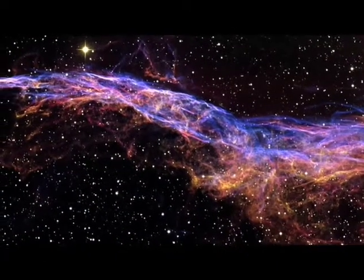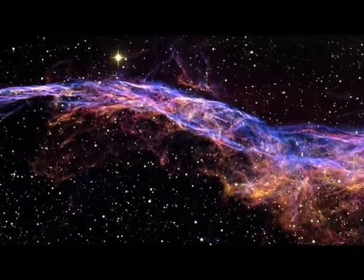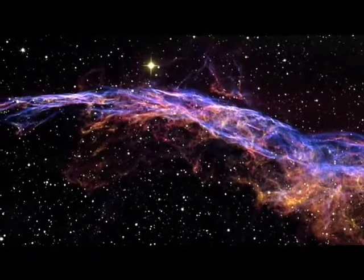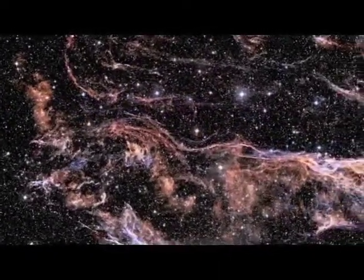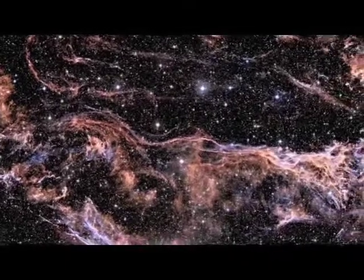The intertwined rope-like filaments of gas in the Veil Nebula result from the enormous energy released as the fast-moving debris from the supernova explosion plows into the surroundings and creates a shock front.